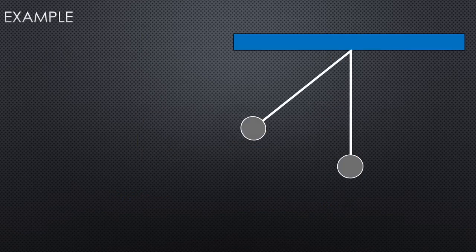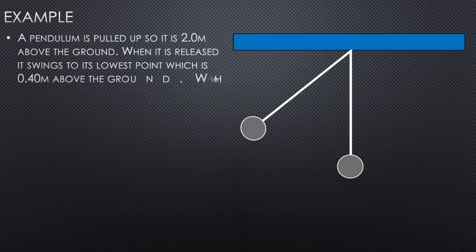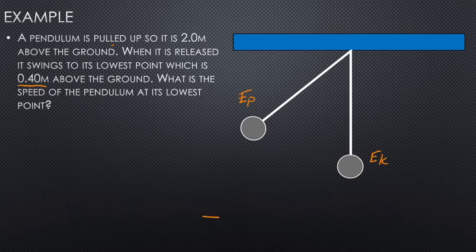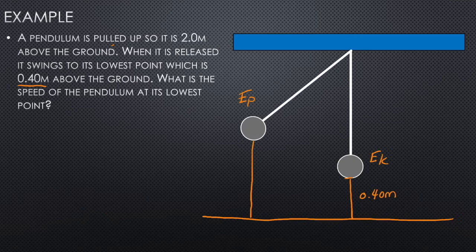We'll do two examples. The first one is with a pendulum. A pendulum is pulled up so it is 2.0 meters above the ground. When it's released, it swings to its lowest point, which is 0.4 meters above the ground. What is the speed of the pendulum at its lowest point? So first we have to recognize the energy being converted — it starts with potential energy here and finishes with kinetic energy at the bottom. The lowest point is not on the ground; it's still 0.4 meters above the ground. So the change in height is 1.6 meters.